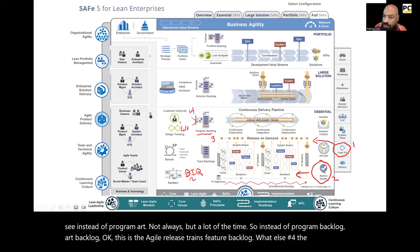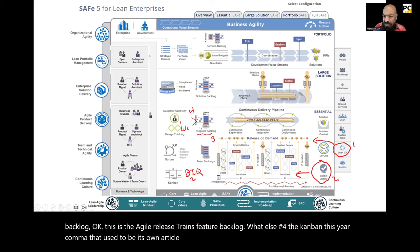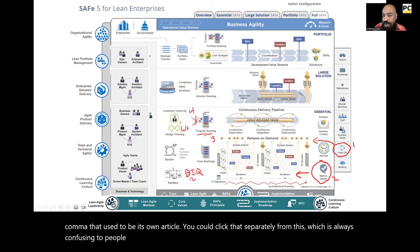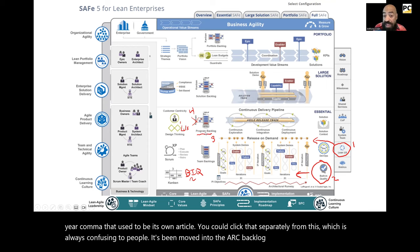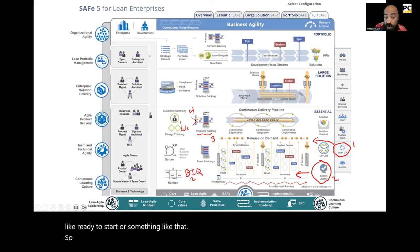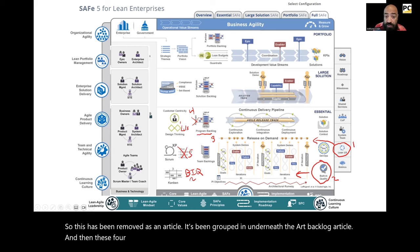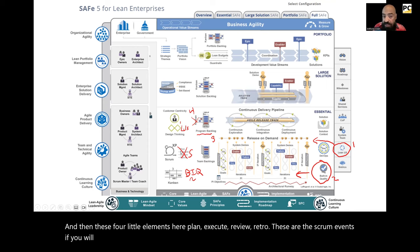Number four: the Kanban. This year, the Kanban that used to be its own article — which was always confusing to people — has been moved into the ART backlog article. They've also renamed one of the columns: it used to say 'backlog,' now it's like 'ready to start.' So this has been removed as a separate article and grouped into the ART backlog article.